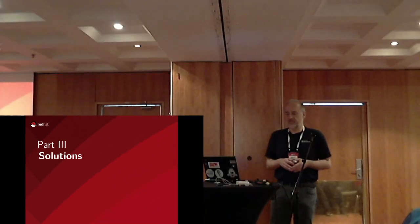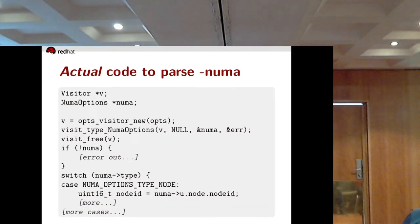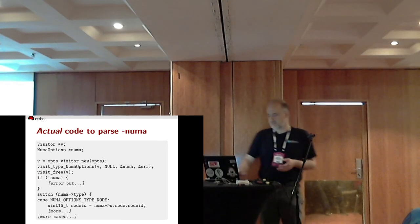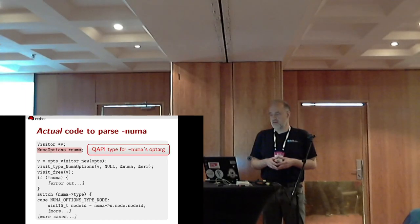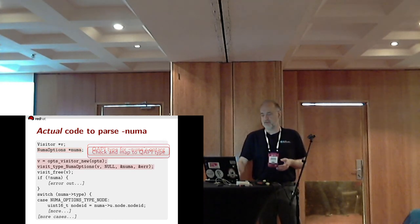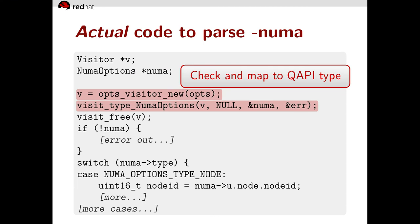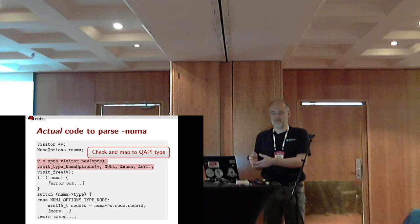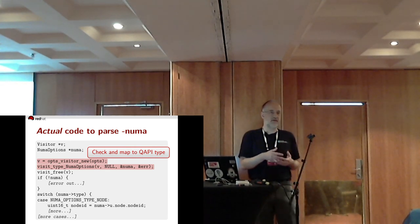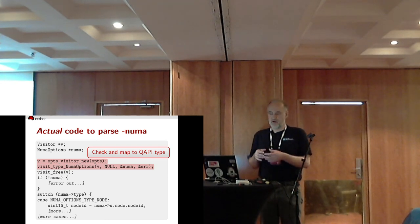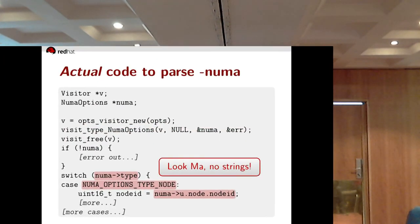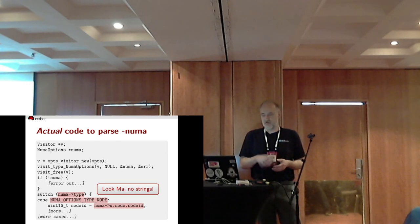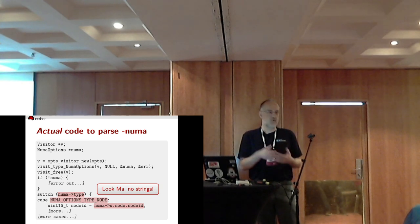What shall we do? Well, in fact we've already done something. When I showed you the code to parse dash-numa, I lied — this is the actual code. NumaOptions is a QAPI type to represent dash-numa's option argument. We take the QEMUopts and map it to a NumaOptions. This mapping checks, so all the string manipulation moves from option-specific code into generic mapping code. We then use parameters just by dotting into the struct, and they have the appropriate C type — fewer string manipulations and also static typing.